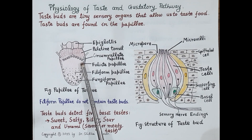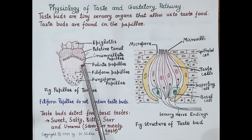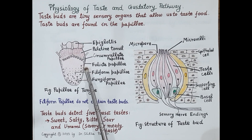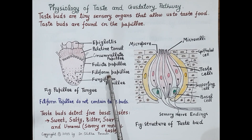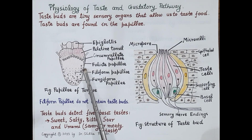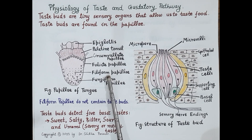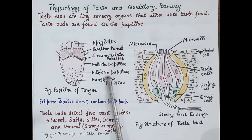Circumvallate papillae are the largest and are located at the base of the tongue, arranged in an inverted V shape. Foliate papillae are located on the sides at the back of the tongue. Fungiform papillae are mainly located around the tip and edges of the tongue. Filiform papillae do not contain taste buds; they are situated on the anterior two-thirds of the tongue, roughen its surface to provide grip and push food inside the mouth, and they sense touch, temperature, and pain.